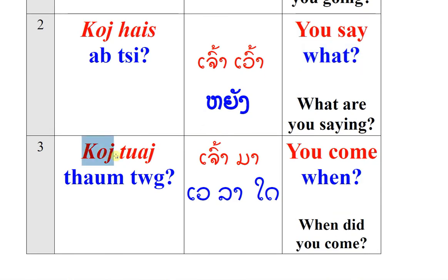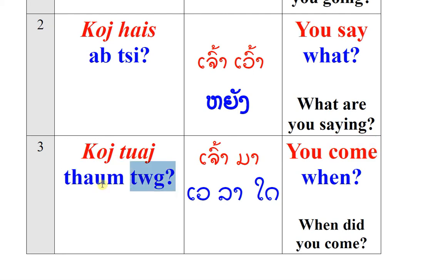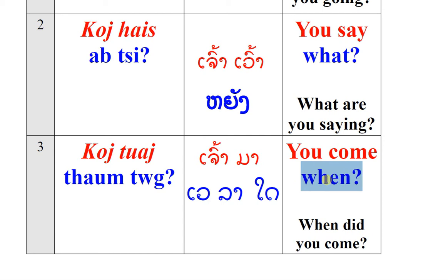Co (Lao), chau (Hmong), you (English). Tùa, tùa (Lao). Ma, ma (Hmong). Come, come (English). Thảo tư (Lao). Về la đài, về la đài (Hmong). When, when (English).